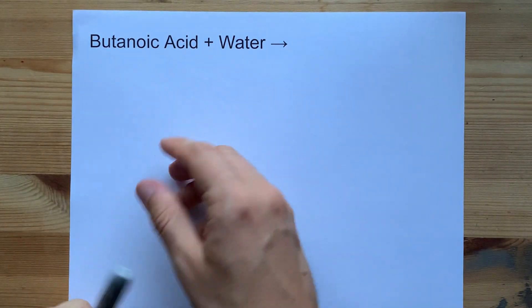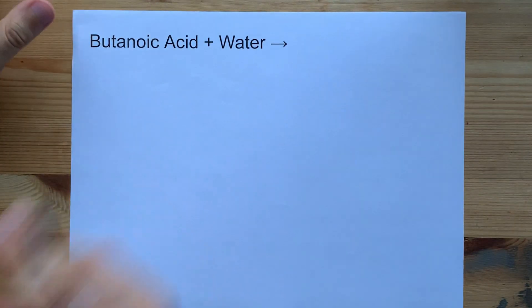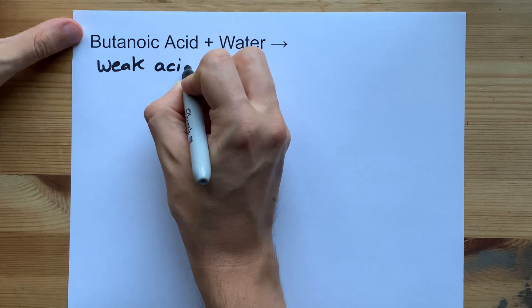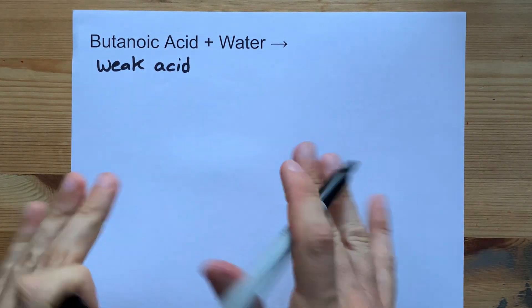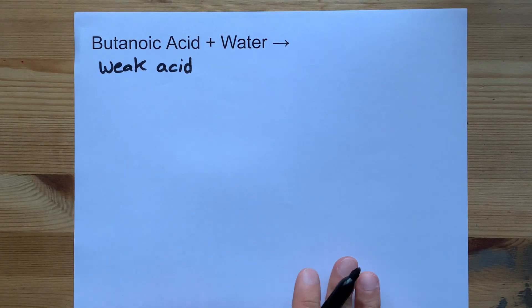Butanoic acid plus water doesn't make a real reaction, per se. Butanoic acid is what we call a weak acid, and almost all carboxylic acids are, unless they have a lot of electronegative atoms on them, but don't worry about that.